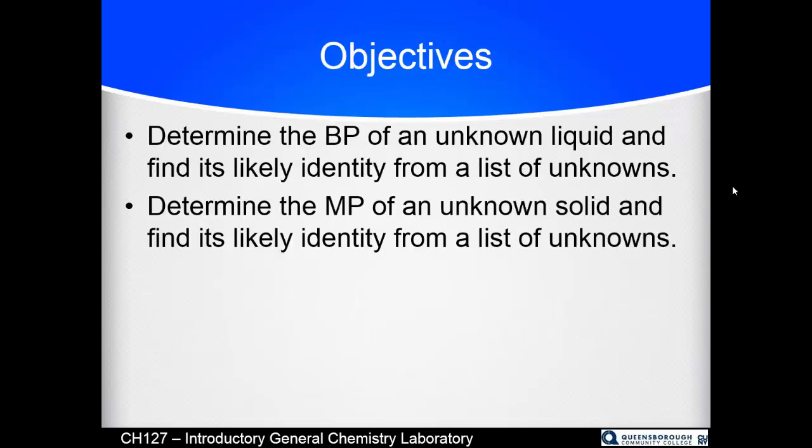Your objectives in this lab are to determine the boiling point of an unknown liquid and find its likely identity. I say 'likely' because there are things that boil at the same temperatures as each other, and you may not 100% be able to identify it based on boiling point alone — you may need to add other clues, just like with the density lab. Color and smell could help you determine the identity. You are also going to determine the melting point of an unknown solid and find its likely identity from a list of unknowns.